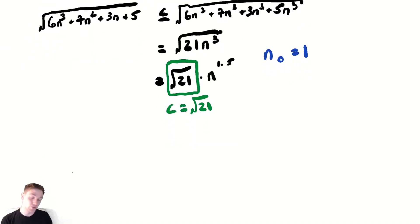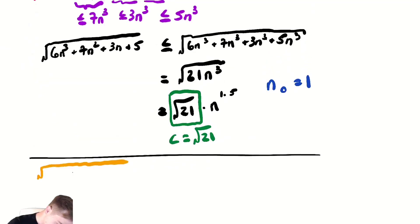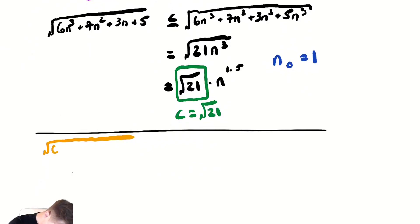Now that shows us that we are in big O of n to the 1.5. We now must show that we're also in big omega of n to the 1.5. So let's do that. We want to show that √(6n³ + 7n² + 3n + 5)...